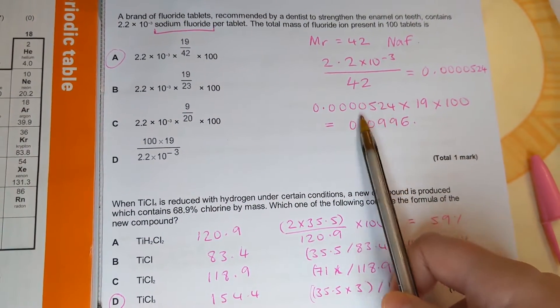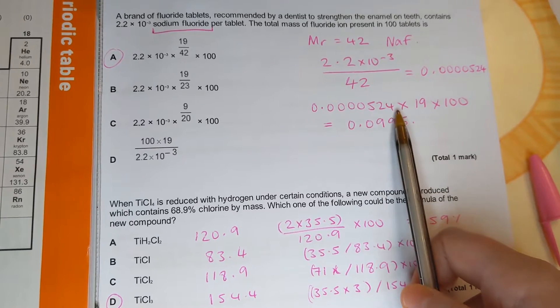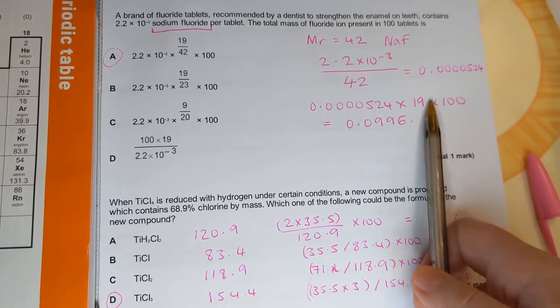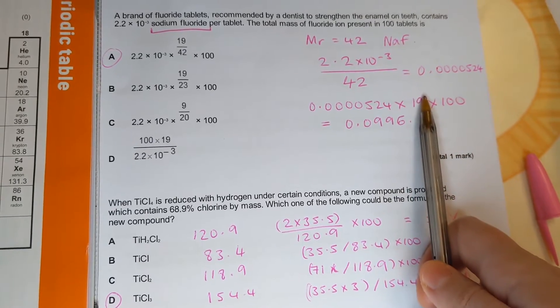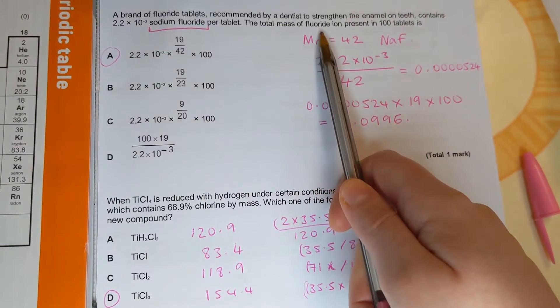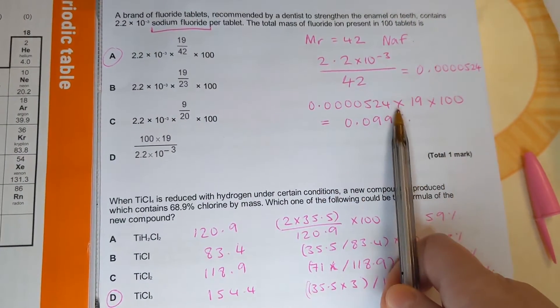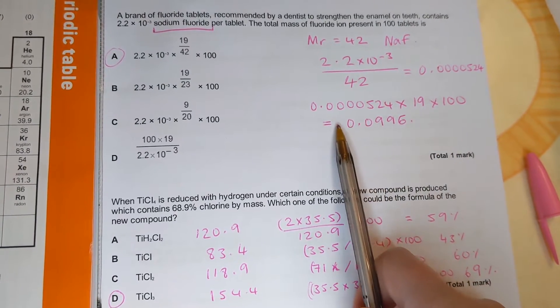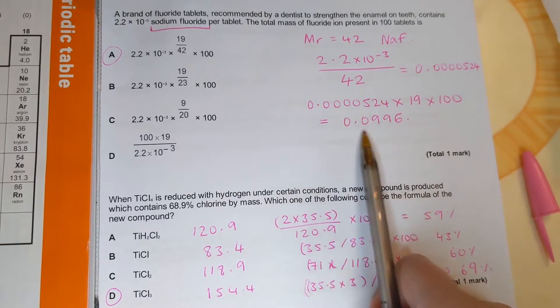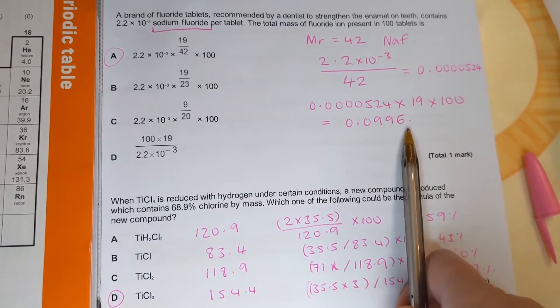Then I'm going to scale it up, so I'm going to times it by the mass number from the periodic table of the fluorine, and it's asking about the mass of fluoride in a hundred tablets so I'm going to times it again by a hundred. And here we get the mass of fluoride in a hundred tablets.